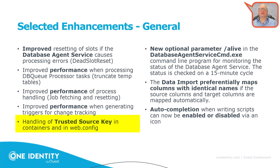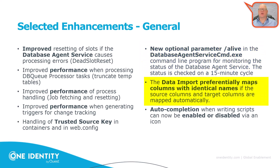Trusted source key involvement was improved again, as discussed in a previous video. The database agent service CMD — the replacement for SQL Server agent startup procedures — now has a new parameter called 'alive,' which checks every 15 minutes to verify that the database agent is running. There is also a new feature in the data importer allowing better matching of column names from import sources. Additionally, for the first time, IntelliSense — called autocompletion in Identity Manager — can now be turned on or off in all code windows.